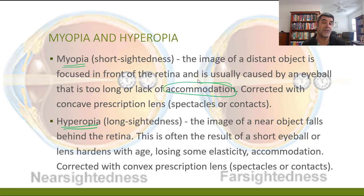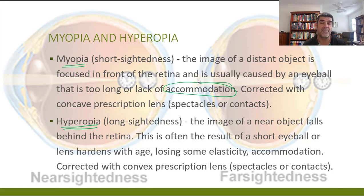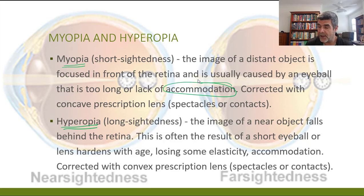For various reasons — sometimes to do with age, sometimes the shape of the eyeball, or the refractive properties of the cornea — this accommodation may not be possible. Generally speaking, correction for these problems can be done with some sort of additional lens.